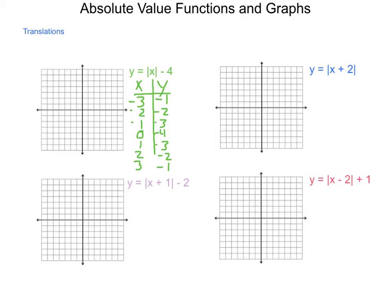Plotting the points: negative 3 comma negative 1, negative 2 comma negative 2, negative 1 comma negative 3, 0 comma negative 4, 1 comma negative 3, 2 comma negative 2, 3 comma negative 1. We end up with a function that splits out in both directions. You'll notice this is very similar to the parent function — it has simply moved down 4 units.